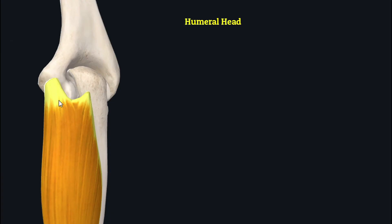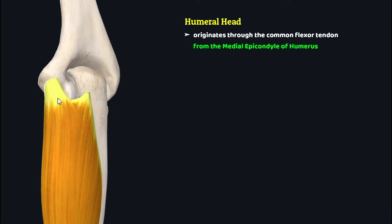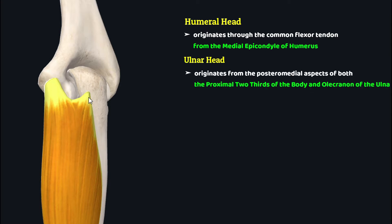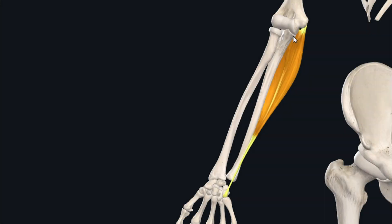The humeral head originates through the common flexor tendon from the medial epicondyle of the humerus. The ulnar head originates from the posterior medial aspects of both the proximal two-thirds of the body and the olecranon of the ulna. These two heads then converge to form a single muscle belly which travels inferiorly towards the hand.